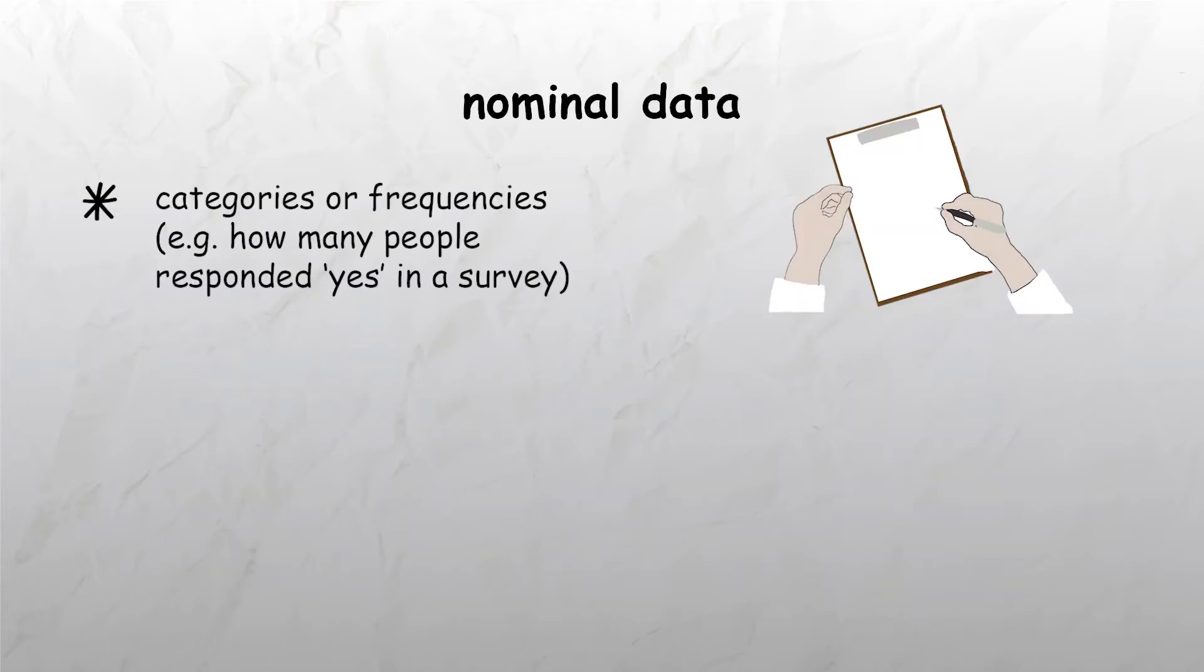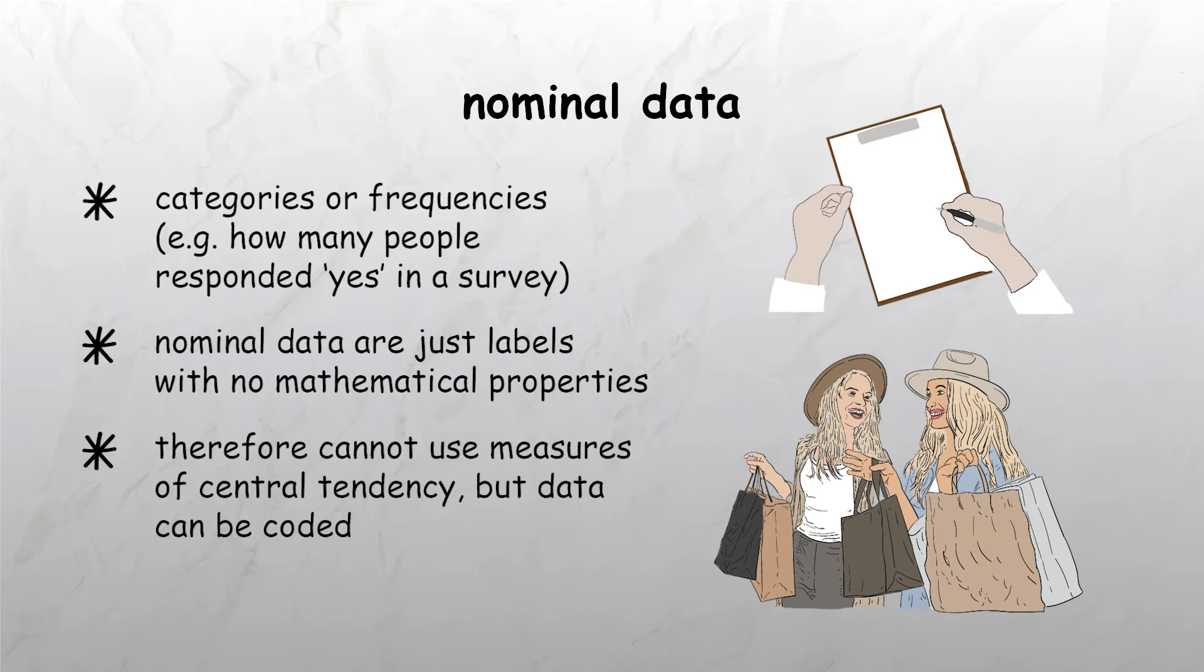Nominal data involves data being in categories or frequencies, for example the frequency of how many people said yes in an answer to a question. The number is just a label or name for a category not having any genuine mathematical properties. With nominal data you cannot use measures of central tendency such as the median, mean and mode. However, outcomes are able to be coded. For example, one could be made a purchase, two could be did not make a purchase, and so on.